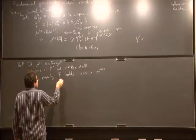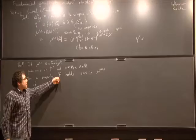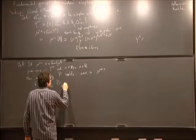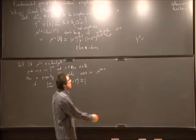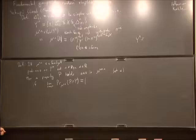A property P holds asymptotically almost surely in this measure space if the limit as N goes to infinity of the probability μ_{N,α} of that property is equal to 1. Sometimes I might say it's happening at α — that's probably my notation, so I don't really need to put that in.